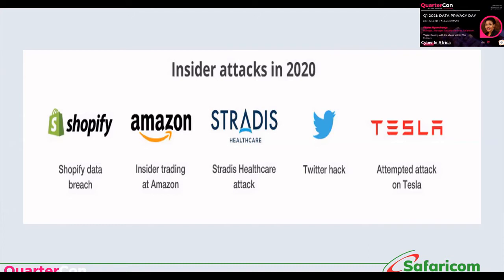Another example is the Stradis Healthcare attack, where the ex-Vice President — a former employee — was accused of gaining unauthorized access to the healthcare package shipping system. He modified and deleted documents related to the shipment of personal protective equipment for medics. This cost the company $5,000 to restore data and renew operations, all during the COVID-19 pandemic, causing delays that had consequences for patients needing attention and workers lacking proper protective equipment.